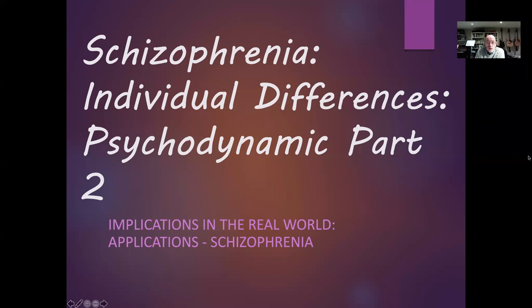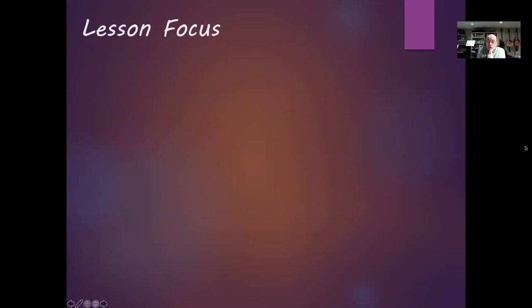Welcome back to the second part of our look at individual differences explanations of schizophrenia, which is the psychodynamic approach. You'd probably be expecting some questions from the last lesson, so pause and ask yourself: am I clear on what we mean by fixation and what that's got to do with schizophrenia? What has regression got to do with schizophrenia? And what exactly is a schizophrenogenic mother?